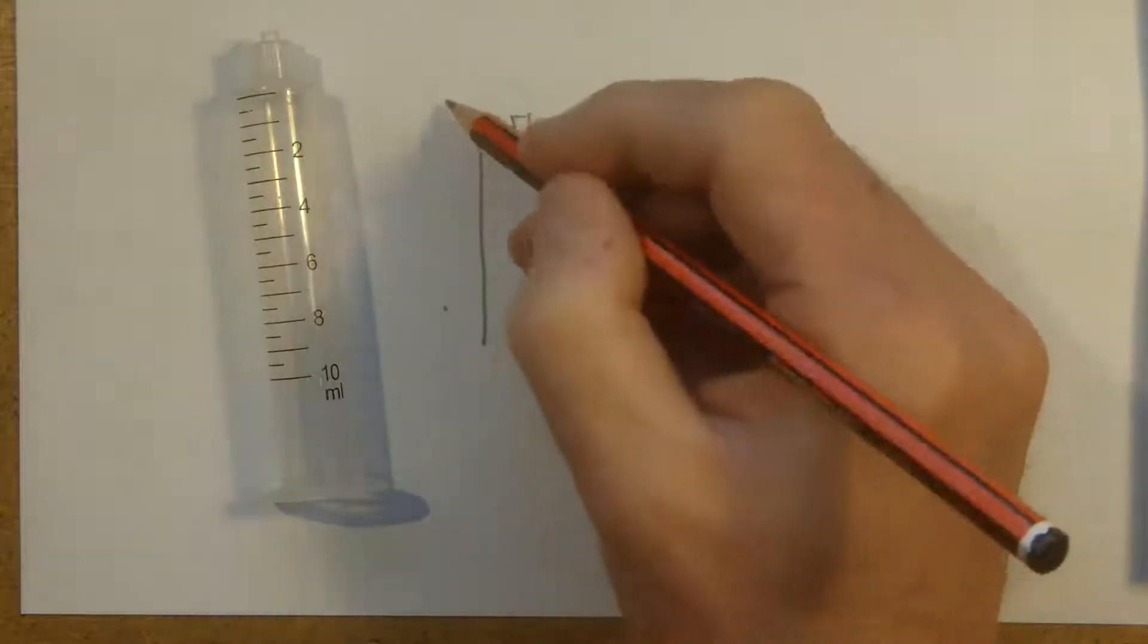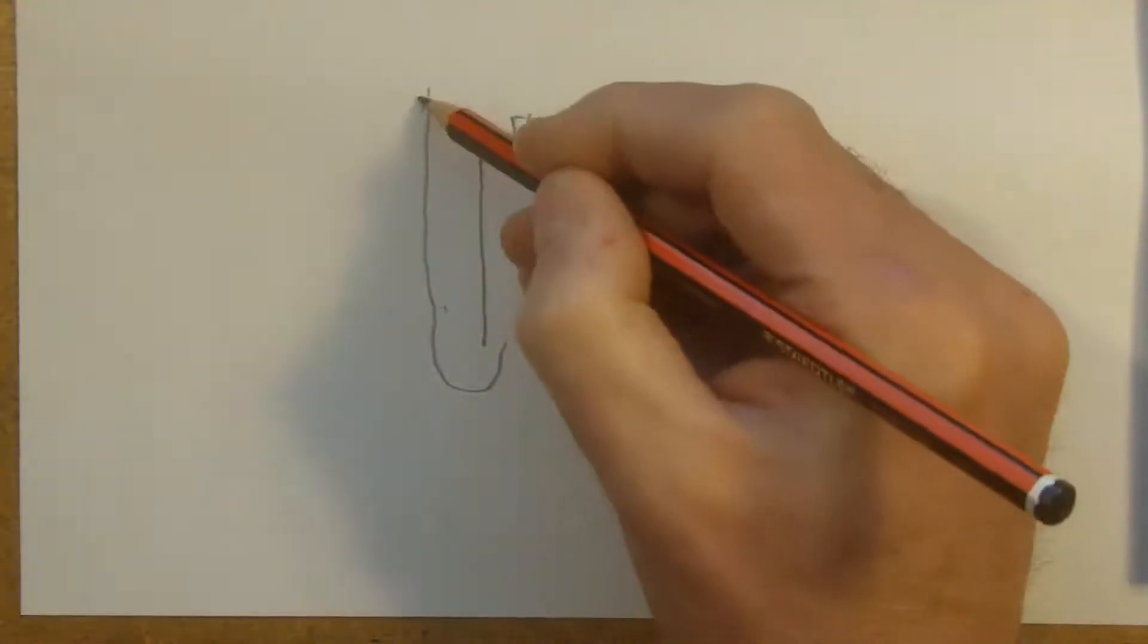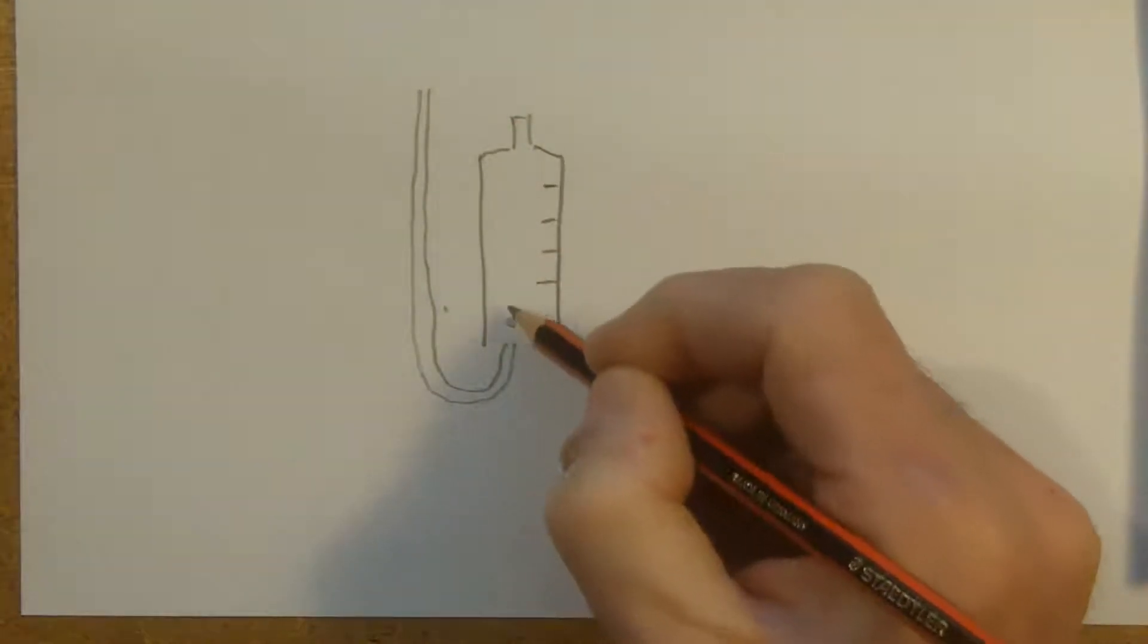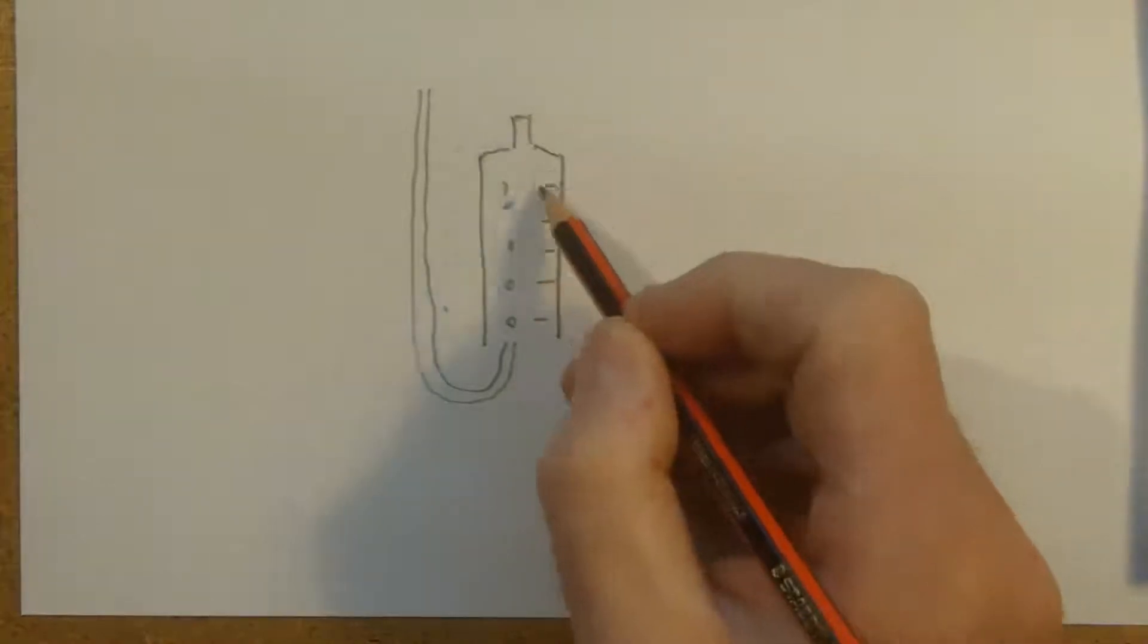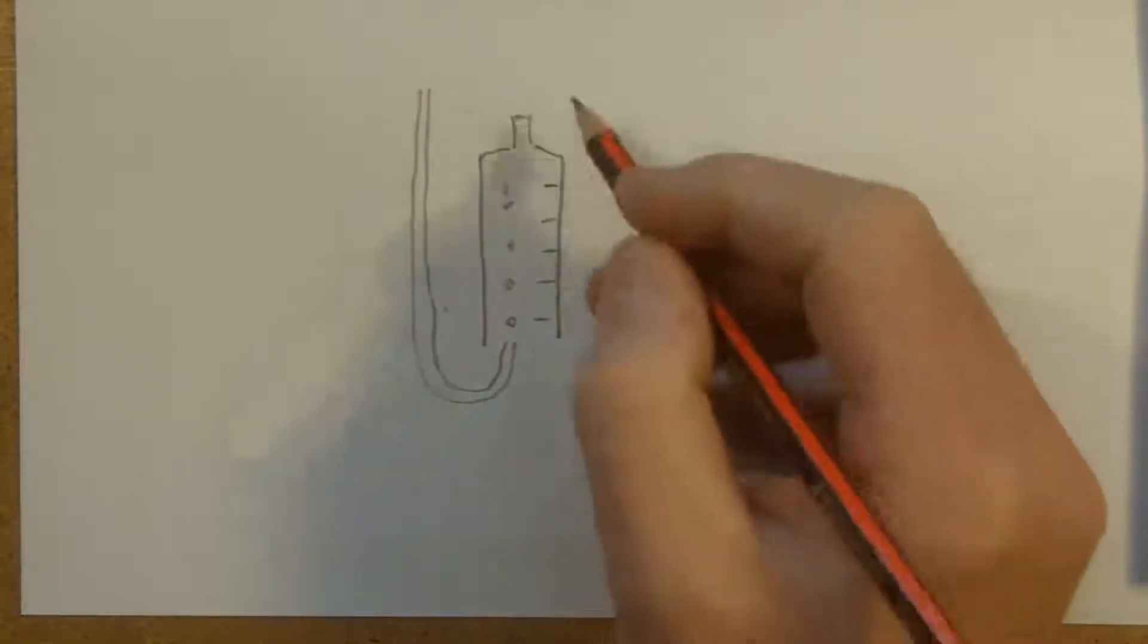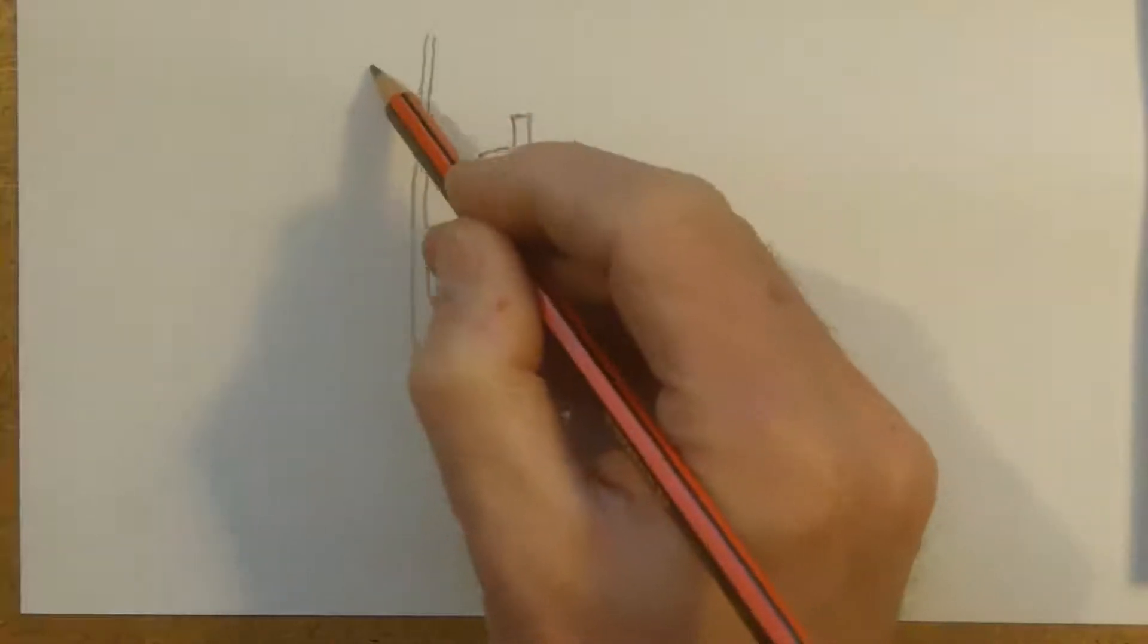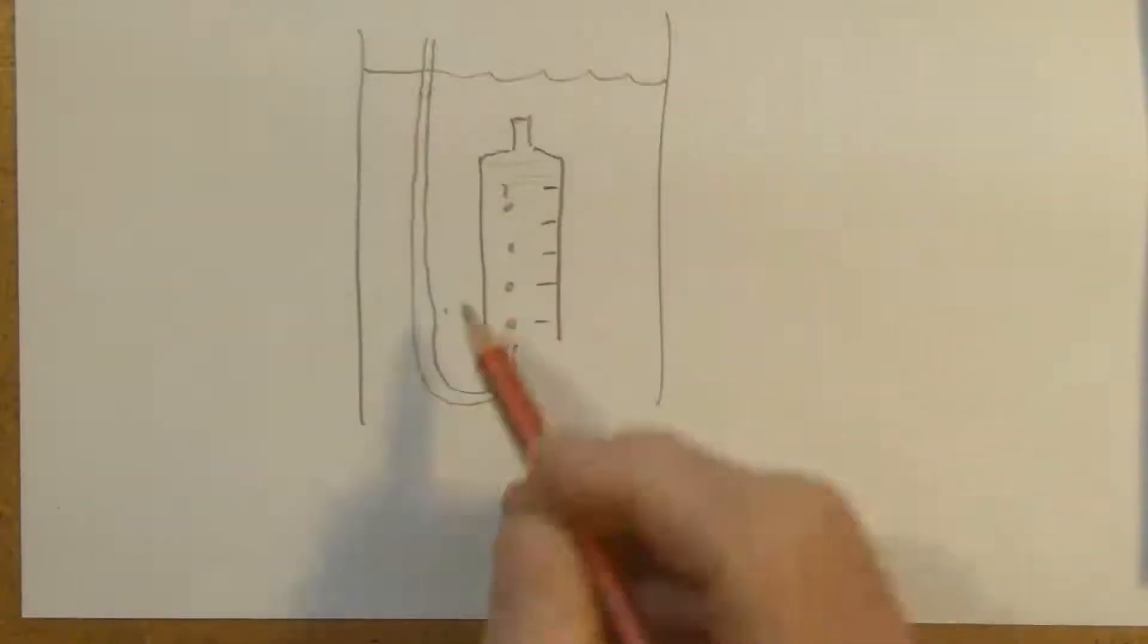I'd have some sort of tube that feeds into this to deliver the gas and create bubbles. So I'll block off the top and then as it fills up it displaces. But it occurs to me that this is underwater so that has to be in some sort of chamber.